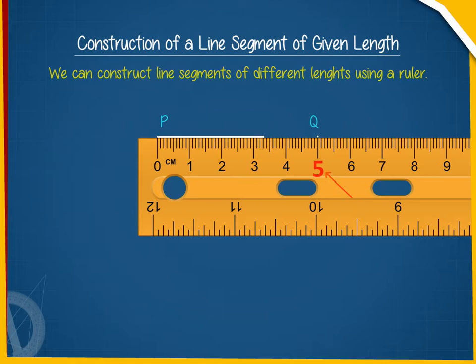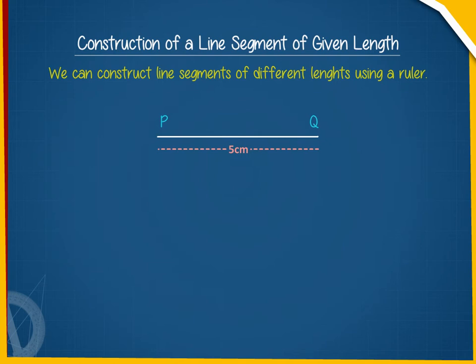Join points P and Q with the help of the ruler. In this way, you get a line segment PQ of length 5 cm.